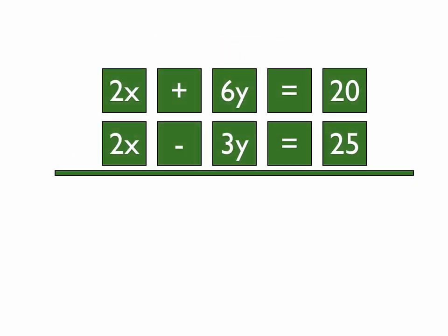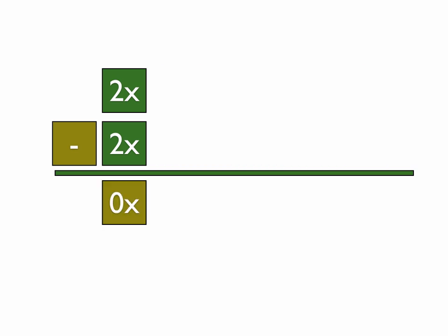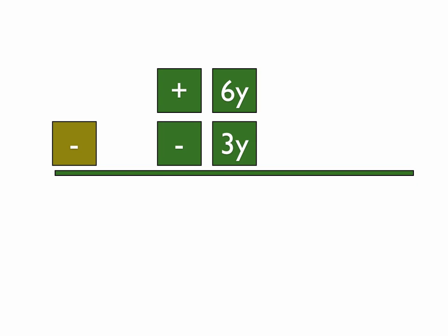Alright, let's look at another problem. This time we have 2x plus 6y equals 20, and 2x minus 3y equals 25. Again, we put the minus sign in there, and we have 2x minus 2x, and that equals 0x.